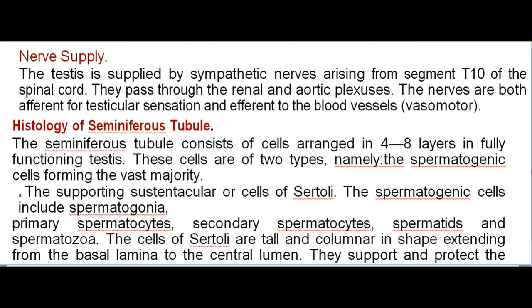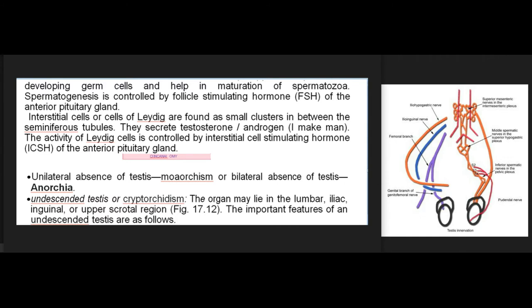Histology of the seminiferous tubule: The seminiferous tubule consists of cells arranged in four to eight layers in a fully functioning testis. These cells are of two types: spermatogenic cells (forming the vast majority) and supporting sustentacular cells of Sertoli. The spermatogenic cells include spermatogonia, primary spermatocytes, secondary spermatocytes, spermatids, and spermatozoa. The cells of Sertoli are tall and columnar, extending from the basal lamina to the central lumen, supporting and protecting developing germ cells and helping in maturation of spermatozoa. Spermatogenesis is controlled by follicle-stimulating hormone (FSH) of the anterior pituitary gland. Interstitial cells (cells of Leydig) are found as small clusters between the seminiferous tubules; they secrete testosterone (androgen). The activity of Leydig cells is controlled by interstitial cell-stimulating hormone (ICSH) of the anterior pituitary gland.